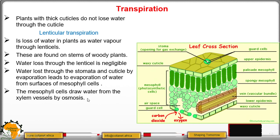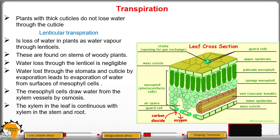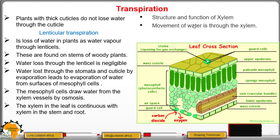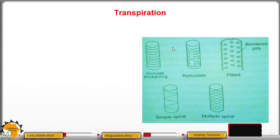The mesophyll cells draw water from the xylem vessels by osmosis. The xylem in the leaf is continuous with the xylem in the stem and the root. Let us now look at the structure and function of the xylem. Movement of water is through the xylem, which is made up of xylem vessels and tracheids.